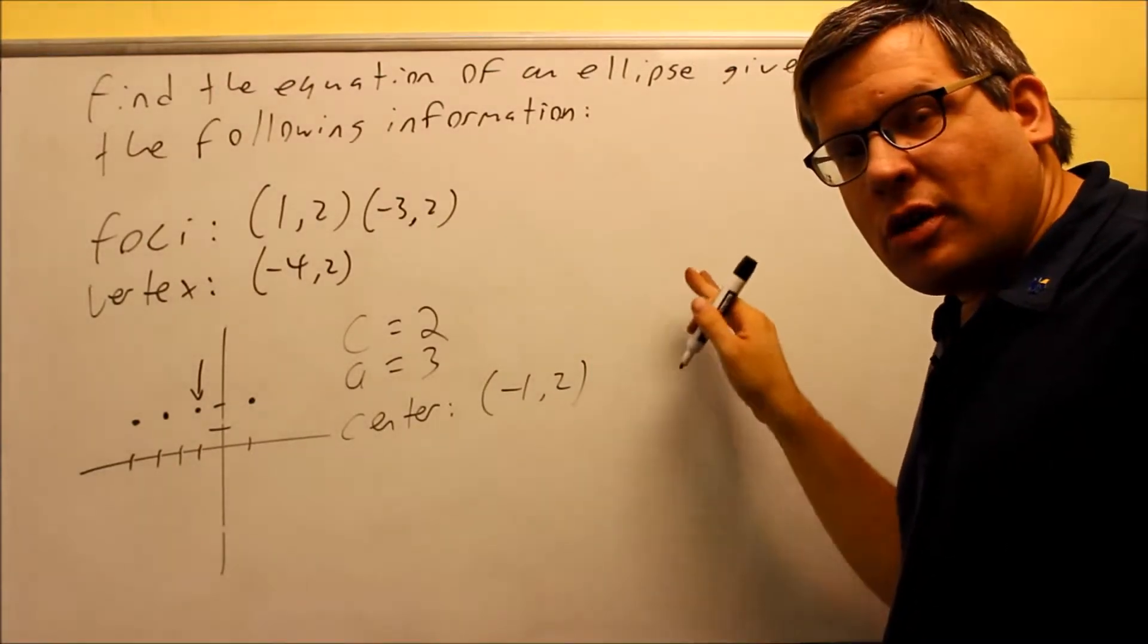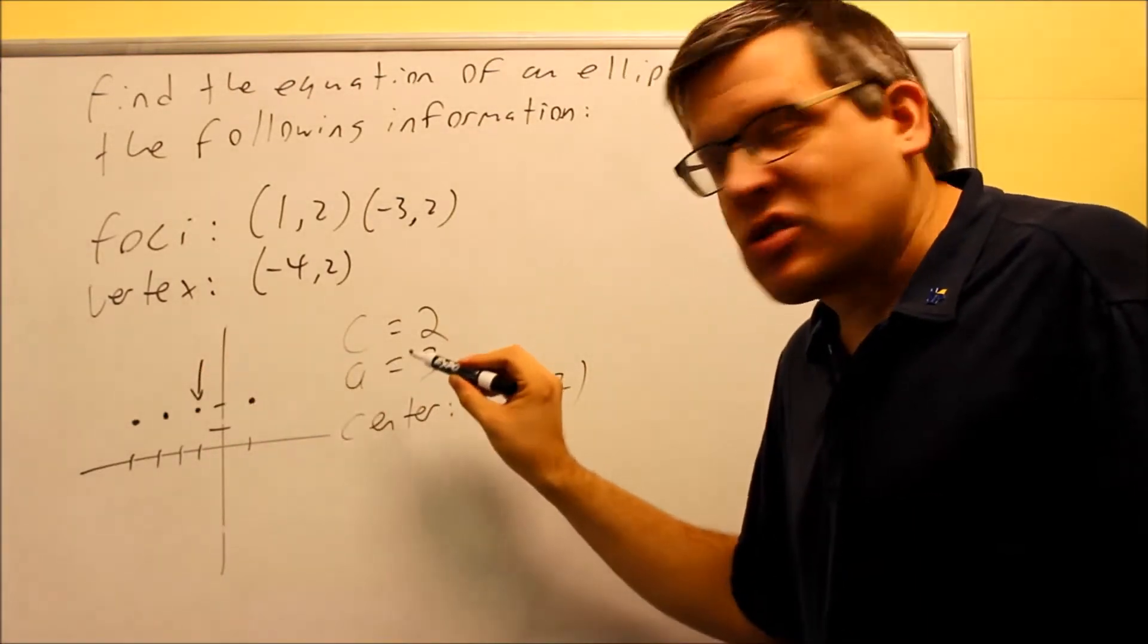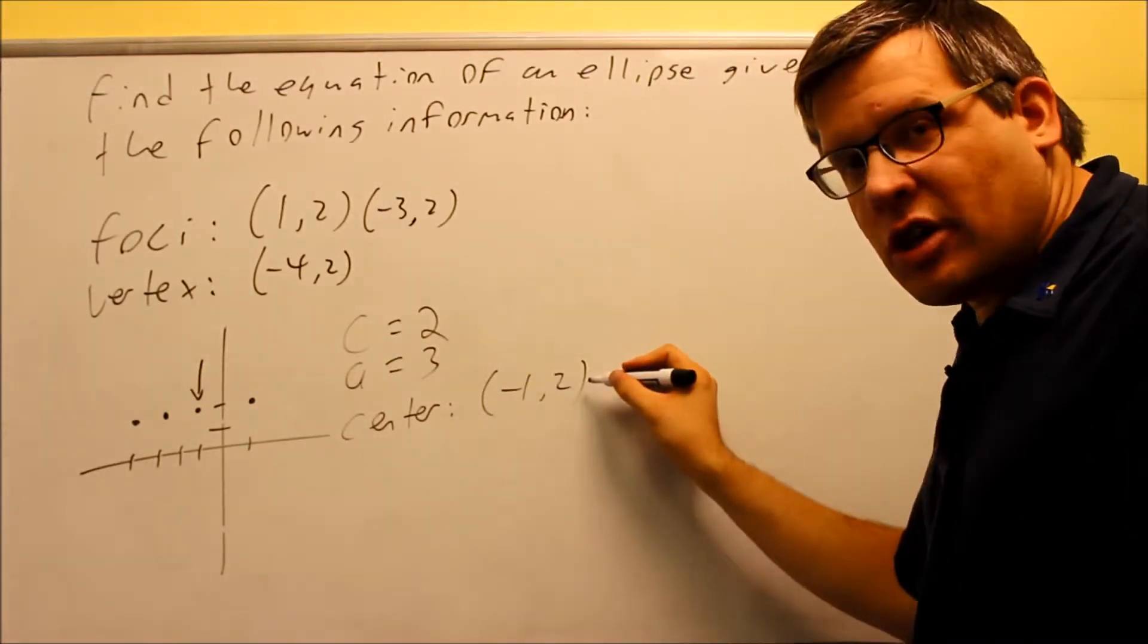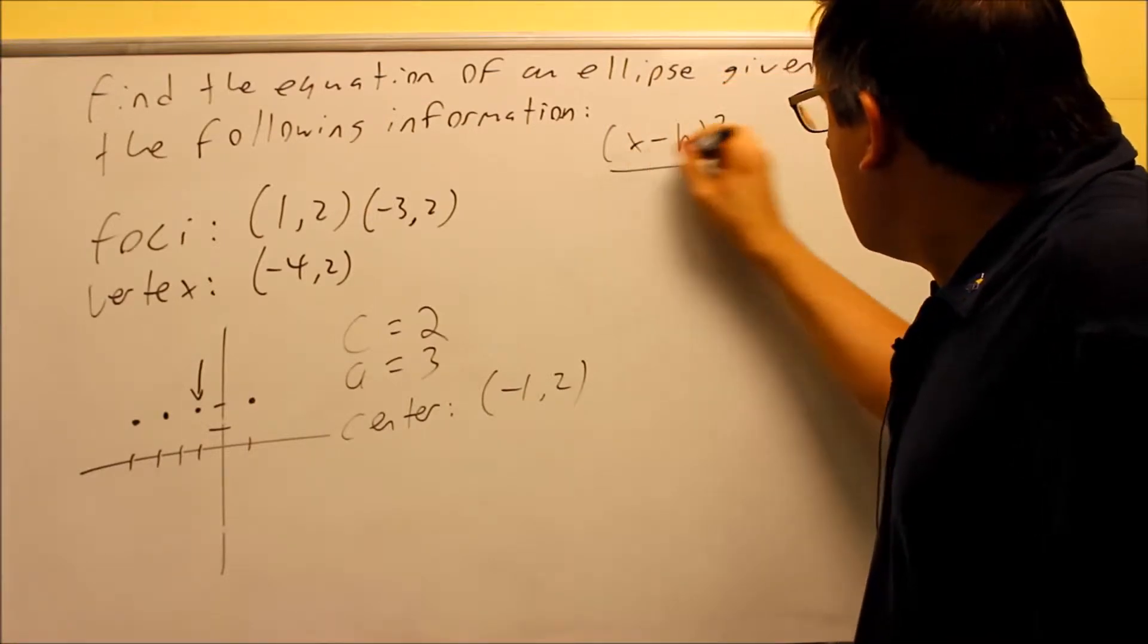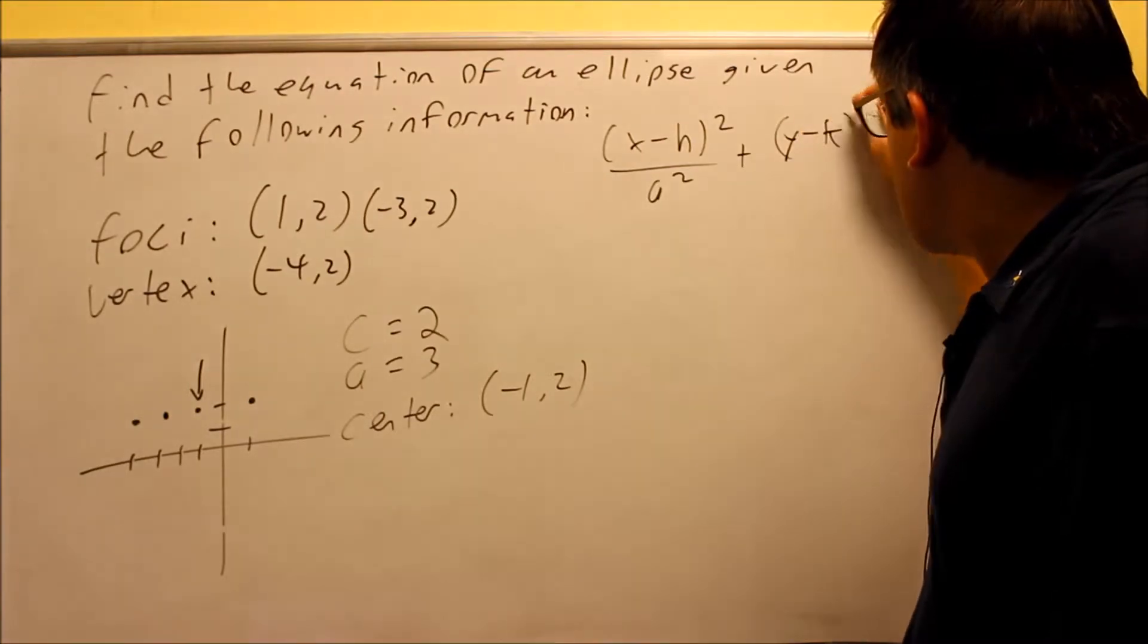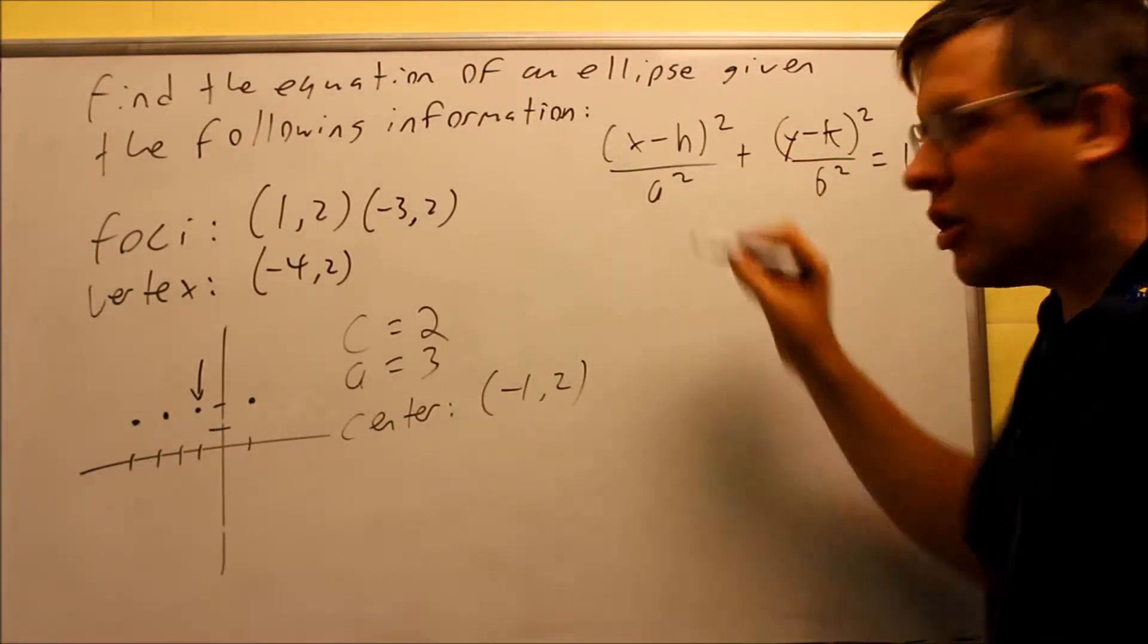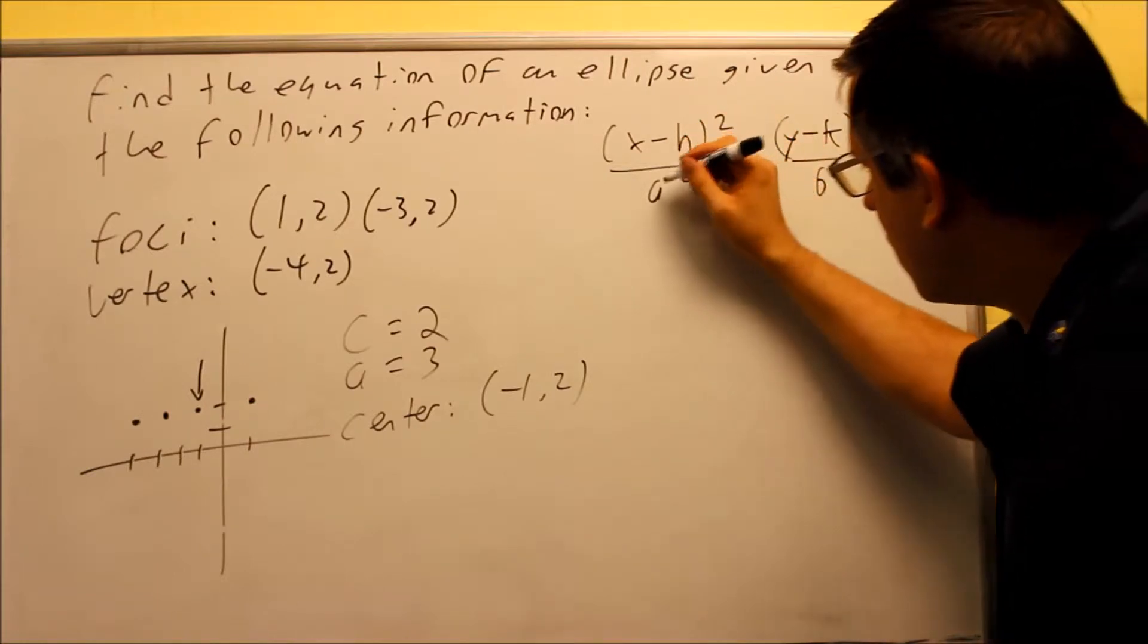The base formula is going to be an ellipse that opens up sideways. Again, we know it's going to be sideways because everything is going along horizontally there. And it has to go through this particular center. So the base formula I have is this one. I want an ellipse that's centered at h k that opens up sideways, which means the a value has to go underneath the x if it opens up sideways. So this is my base formula I'm starting with here.